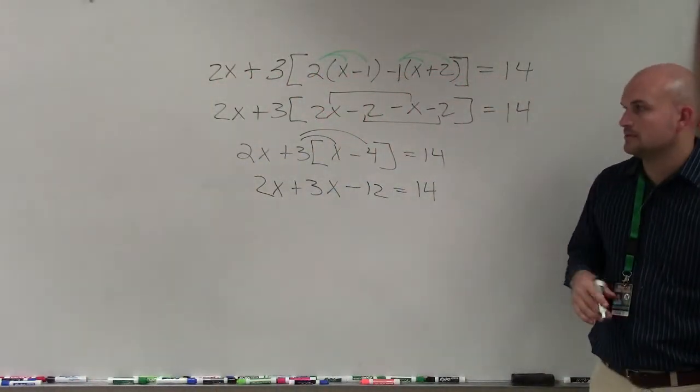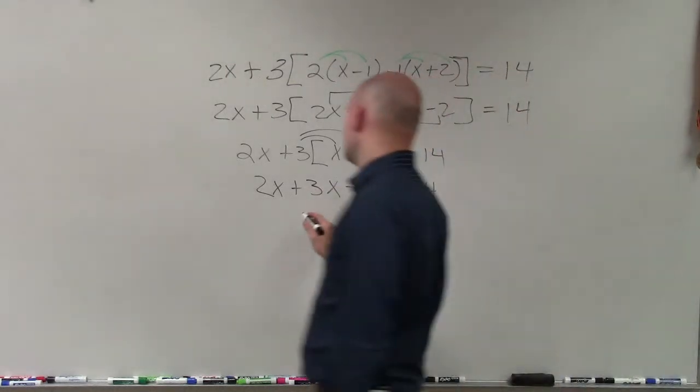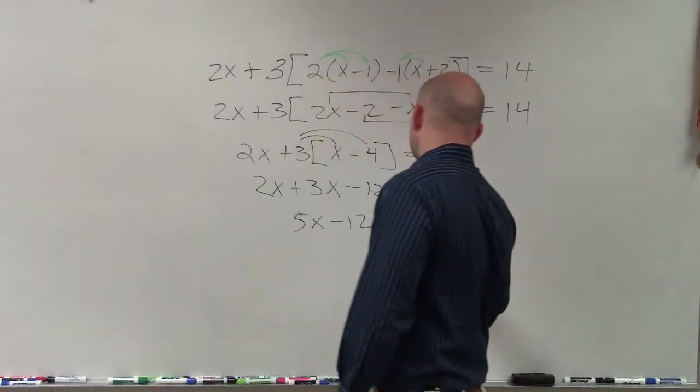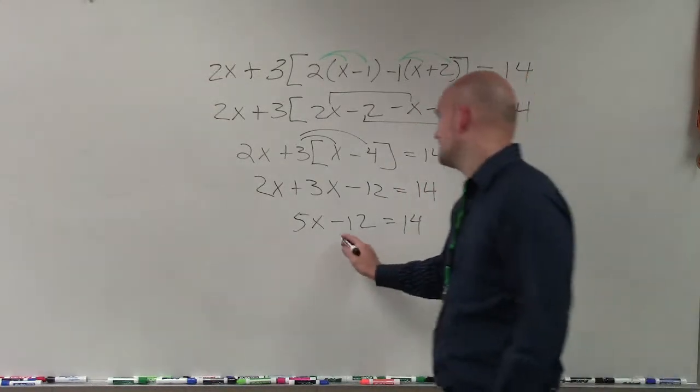Alright, combine your like terms. 2x plus 3x is 5x minus 12 equals 14.